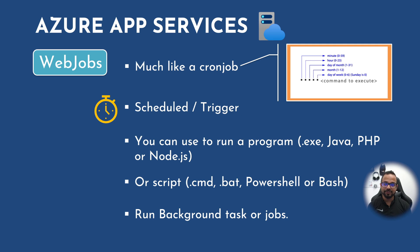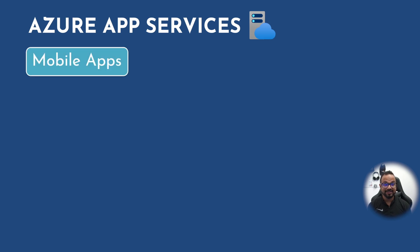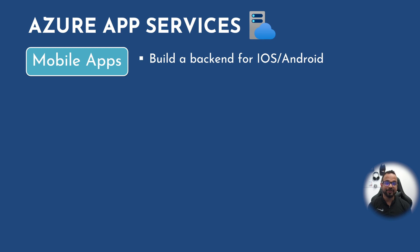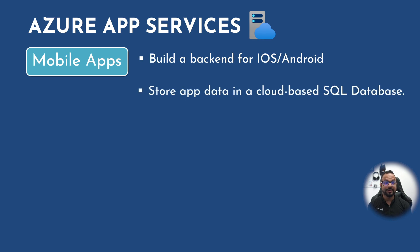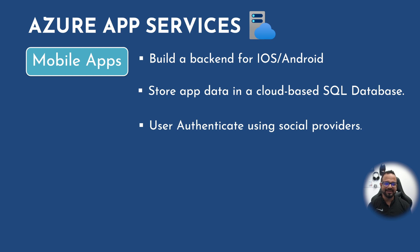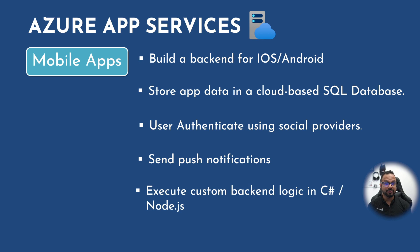The ideal use case for Azure Web Jobs is to run any background task or jobs. The next one is Mobile Apps. As the name suggests, it enables you to build a backend for your iOS or Android application. You can store app data in a cloud-based SQL database, and it provides user authentication using social providers such as Microsoft Authenticator, Google, or Facebook.